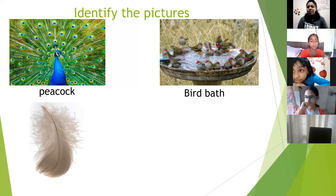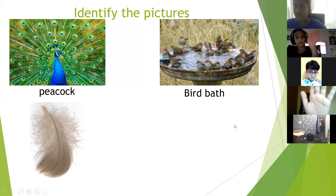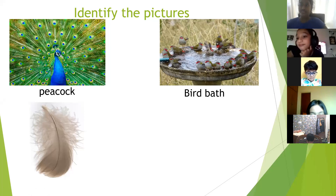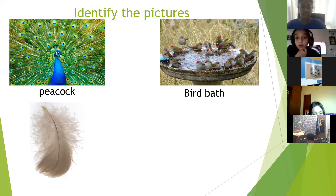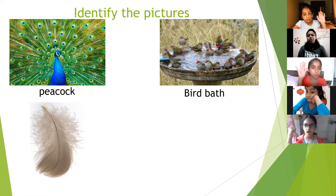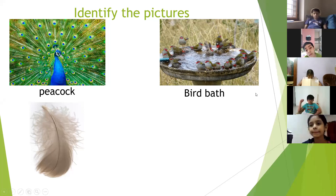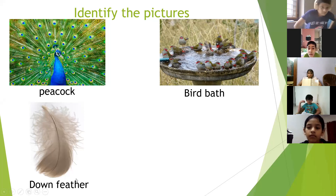Students need to be careful with the pictures in the textbook. Akshara identified a feather. The teacher asked which type of feather. After prompting, the student answered: down feathers. That is correct — it is down feathers.